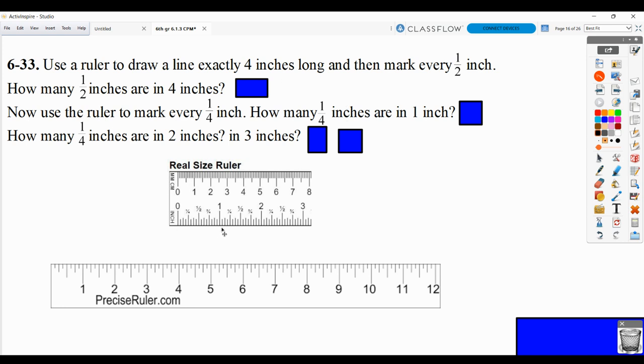The other thing that this ruler shows that is nice is a lot of rulers have, if you count them, 16 spaces between the numbers, meaning that each line here is representing 1/16th of an inch. This ruler shows only eight spaces between the numbers. And that can happen in inches as well. Sometimes rulers are divided into 16ths, sometimes into 8ths. And the way that you know is by counting the number of spaces.